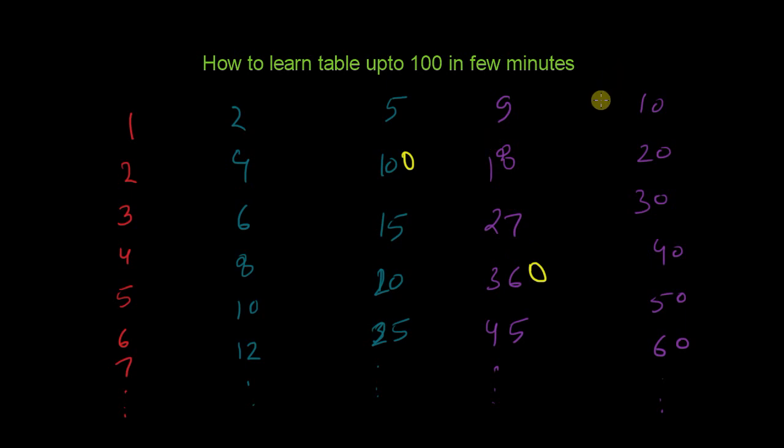Now if you want to make a table of 100, it's the same thing. For 100 times 4, you do the table of 10 times 4, which is 40, then add a 0. It becomes 400.